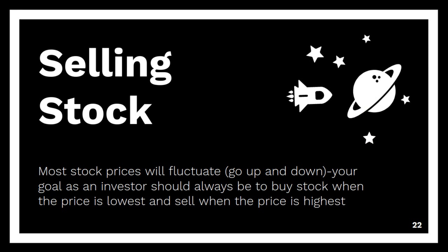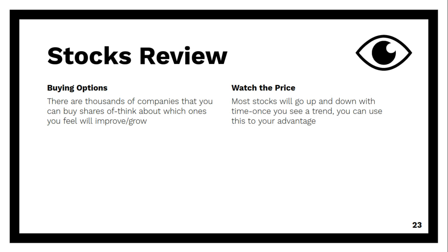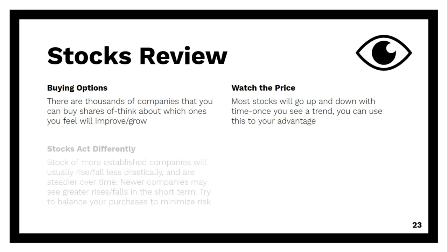Always keep in mind that most stock prices will fluctuate — go up and down — over time. It's very rare to see a company consistently rise in value every week or every month. Your goal as an investor should always be to buy stock when the price is the lowest it will be moving forward and to sell when the price of a stock is at its highest. For a brief review: there are literally thousands of companies you can buy shares of stock in. Think about the ones you believe will improve and grow into the future. Watch stock prices once you buy — most stocks will go up and down over time, but once you see a trend, you can use this knowledge to your advantage.